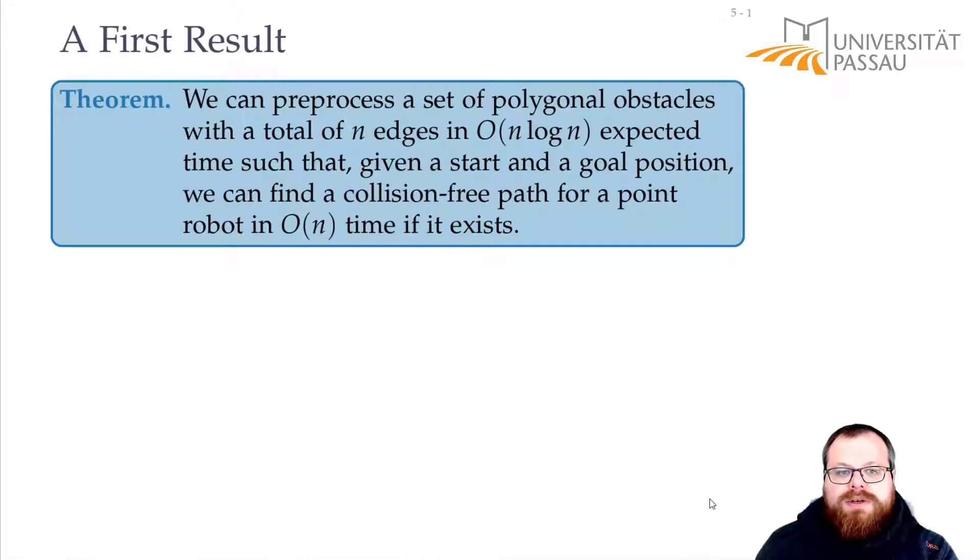This gives us our very first result. We can preprocess a set of polygonal obstacles with a total number of n edges in order of n log n expected time, such that if we have given a start and goal position, then we can find a collision-free path for the point robot in order of n time, if it exists.